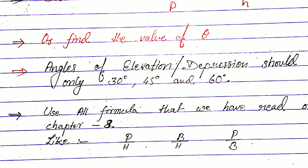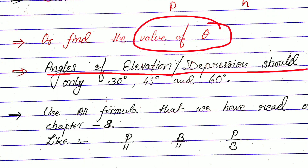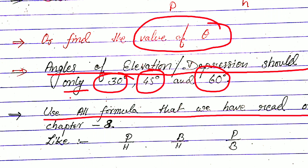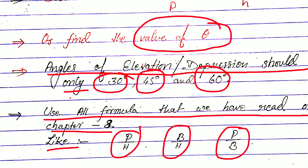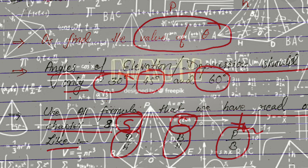Some important points for this chapter: we have to find height, distance, or sometimes the value of theta. The angle of elevation or depression should be only 30°, 45°, or 60°. We have to use all the formulas from Chapter 8 — P/H stands for sin theta, B/H stands for cos theta, and P/B stands for tan theta. That's all for this video, see you in the next one, bye bye everyone.